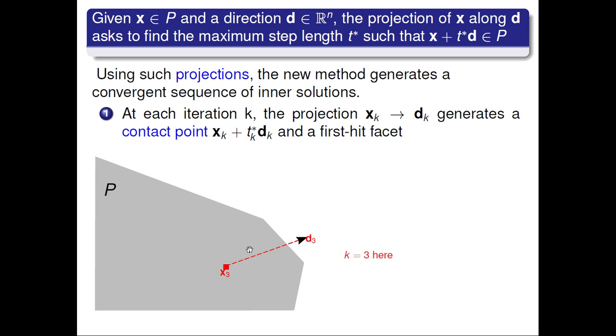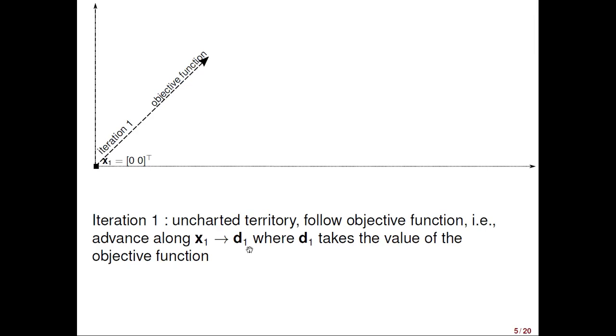This is how things may happen, for instance, at iteration k equals 3. If the polytope P is still unknown, the projection subproblem needs to return this constraint in red, and also the contact point, the small red circle. This is how it works. Let me first introduce the general dynamics of the algorithm before discussing how to solve the projection subproblem.